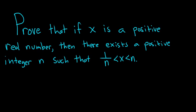Prove that if x is a positive real number, then there exists a positive integer n such that 1 over n is less than x, which is less than n.